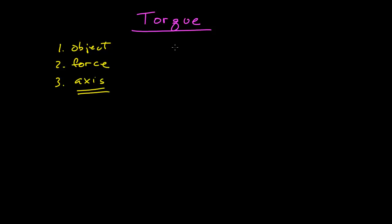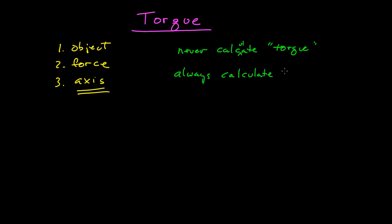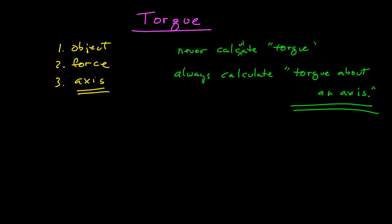That's our first important idea: you never just calculate torque. You always calculate torque about an axis. So having a torque presupposes that you've already chosen an axis about which to calculate your torque. You have to assemble your object, your force, and your axis before you can calculate a torque.